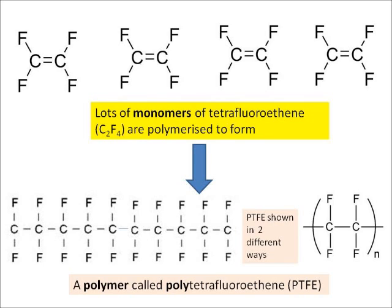In this example, the monomer is tetrafluoroethene — that's C2F4. Along the top, you can see lots of different monomer molecules. Normally there'll be lots and lots of them. When they're polymerized, that double bond between the two carbon atoms breaks up and they all line up. Down at the bottom you can see the polymer which is formed, called polytetrafluoroethene. It can be shown in two different ways — both on the bottom left and on the bottom right.